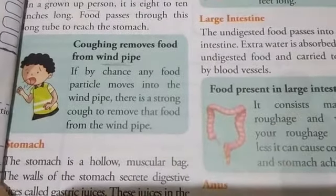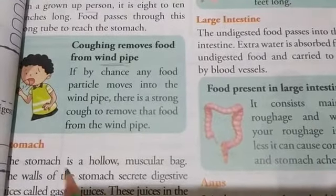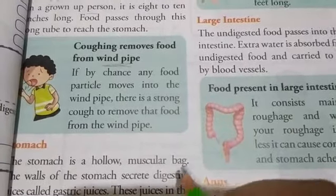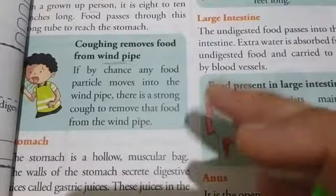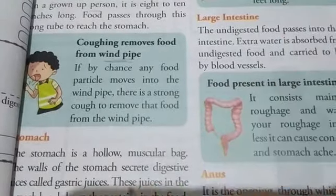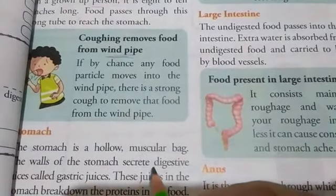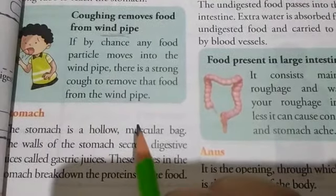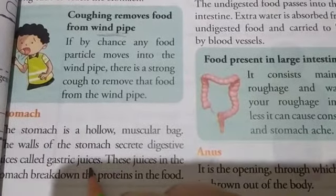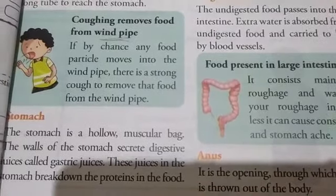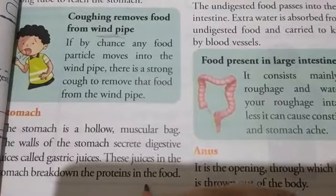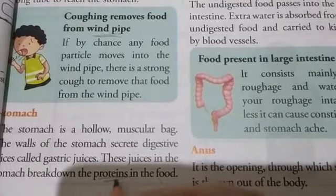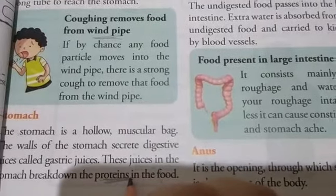Next one is the stomach. It is a hollow muscular bag which can stretch to store the food. The walls of the stomach get stretched to store the food, and the walls of the stomach release digestive juices called gastric juices. These juices in the stomach break down the proteins in the food and help in the digestion of proteins.